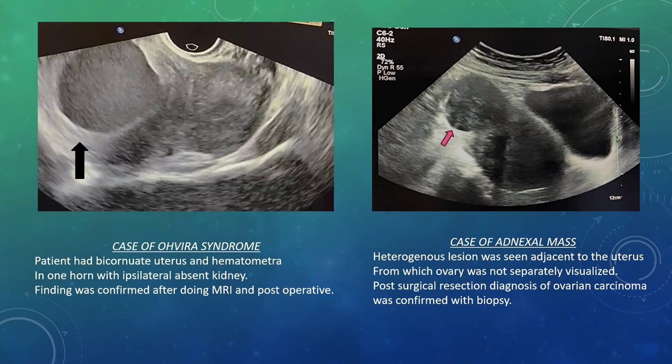Case 4 shows a case of adnexal mass. A heterogeneous lesion was seen on transvaginal sonography adjacent to the uterus from which ovary was not separately visualized. It was diagnosed to be ovarian neoplasm. Post-surgical resection, diagnosis of ovarian carcinoma was confirmed with biopsy.